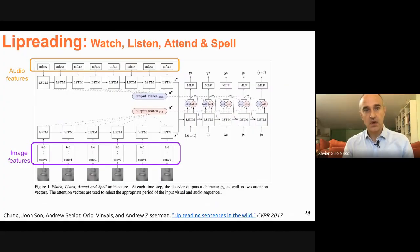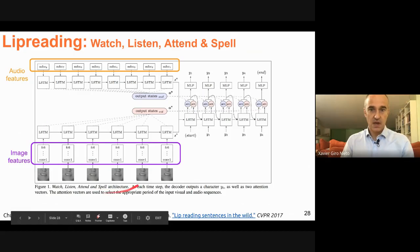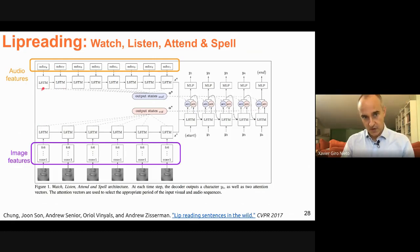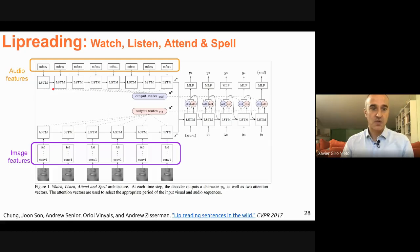Later work from Oxford and DeepMind tackled lip reading in the wild with a new dataset. The architecture includes visual features for the lips, an LSTM decoder with attention, and optionally audio features. When audio features are included, results are much better since it becomes a speech recognition task. Results with visual features only are promising and provide a good starting point.